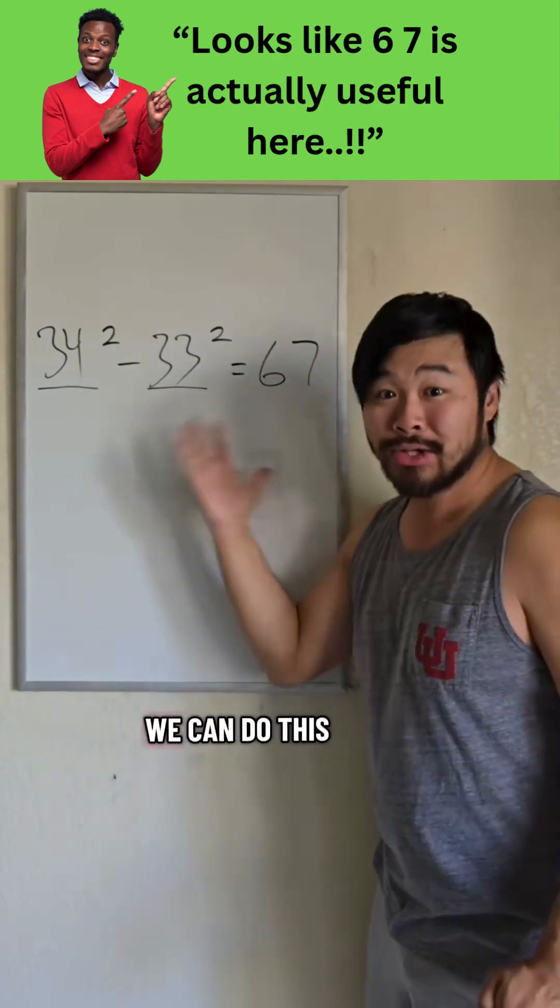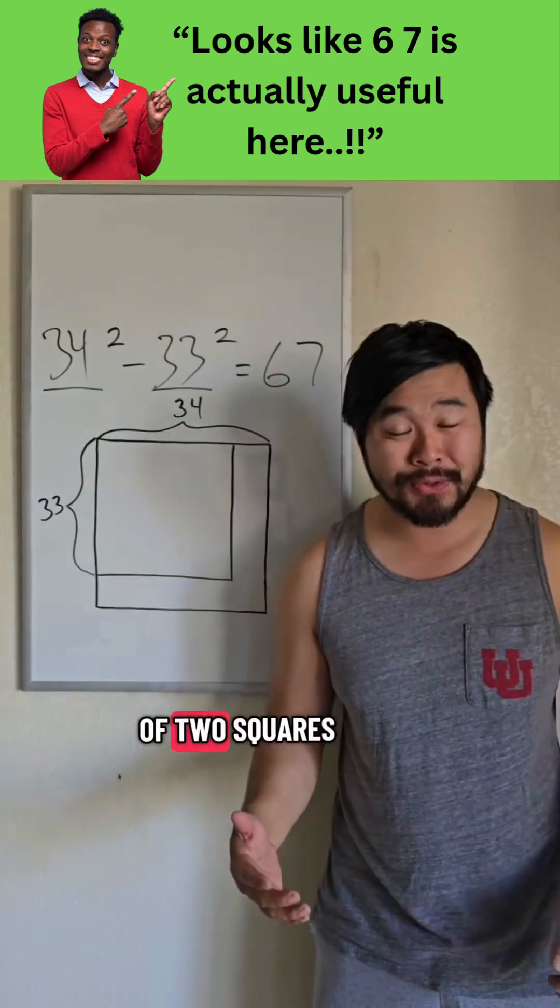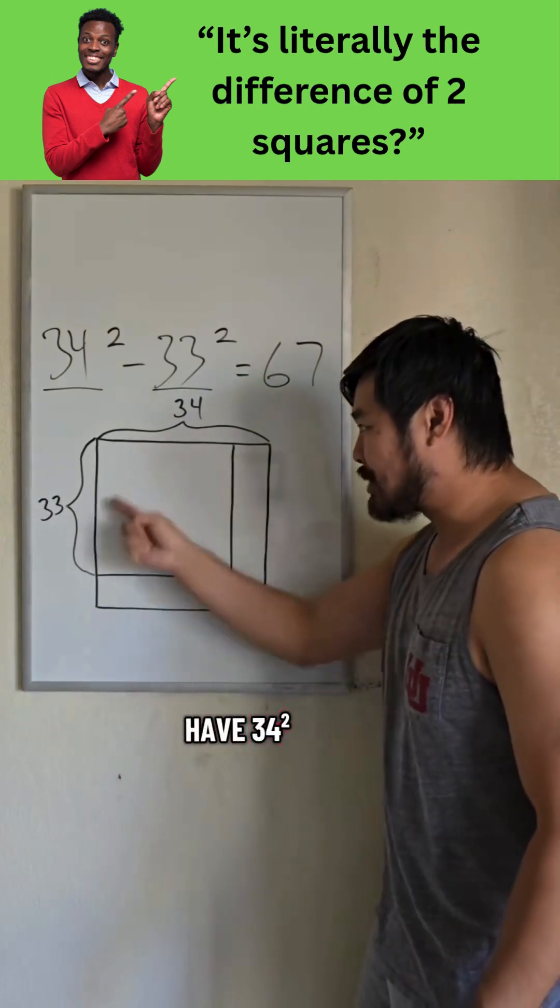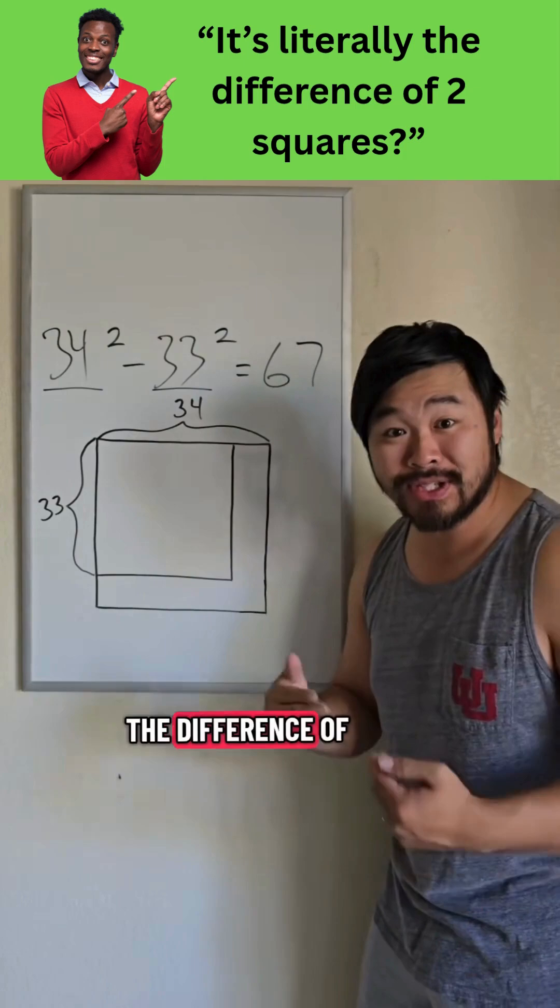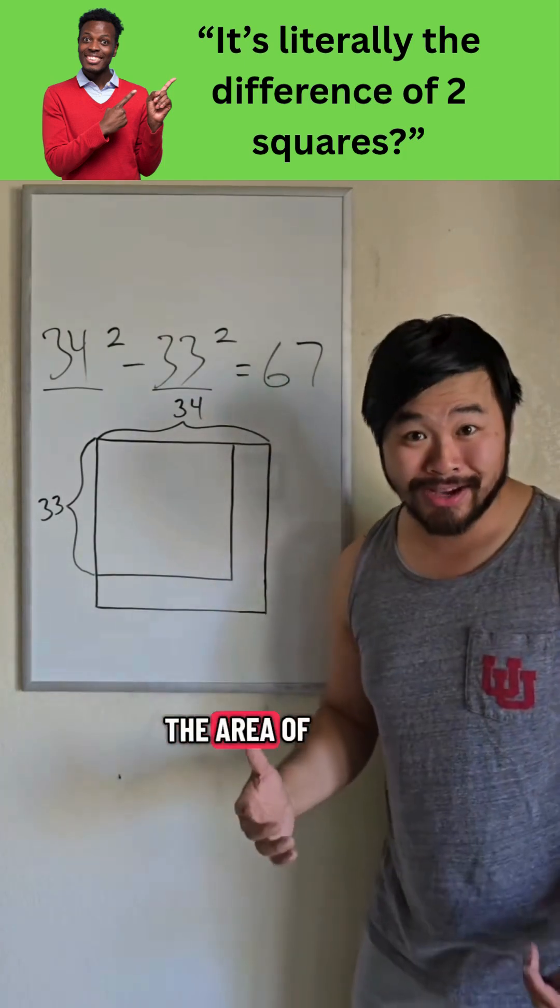So how do we know that we can do this? Let's find out. We can think of the difference of two squares as literally the difference of two squares. So if we have 34 squared and 33 squared, the difference of these two squares is in this L shape. So let's find the area of the shape.